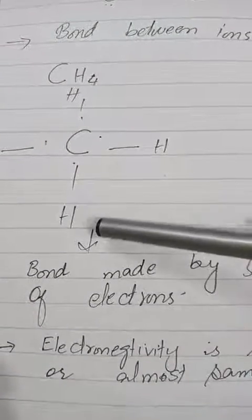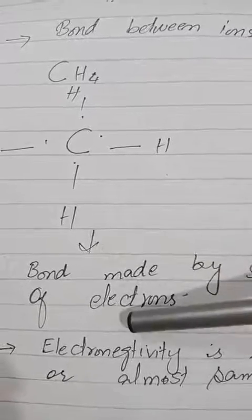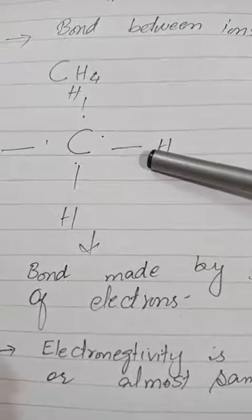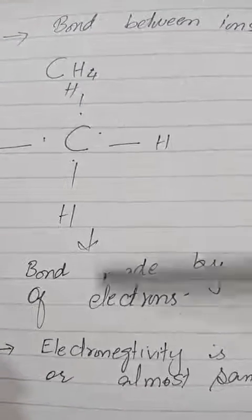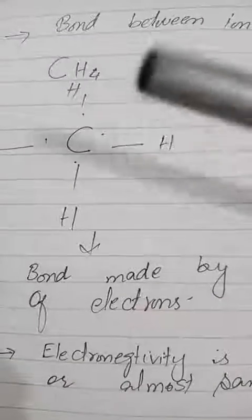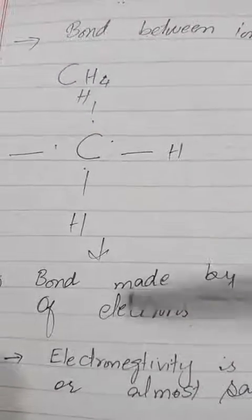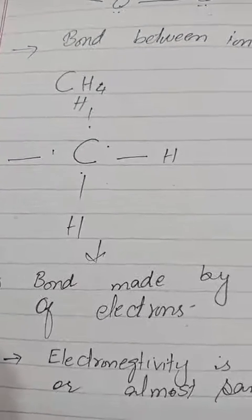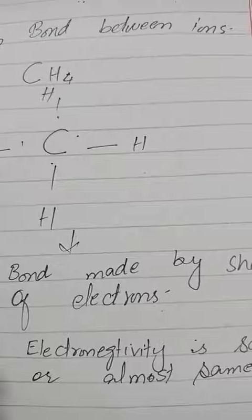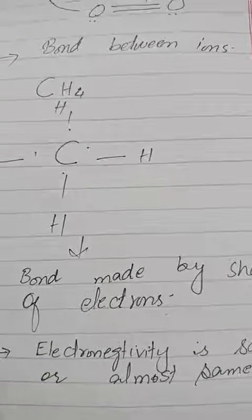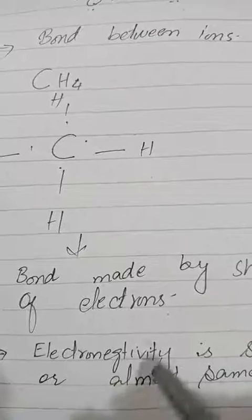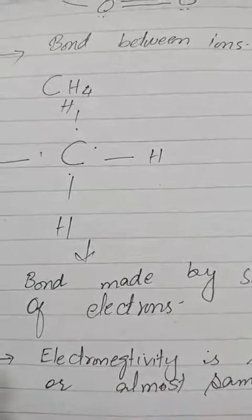Next, we will discuss the types of chemical bonds — different types of forces between atoms, between groups of atoms, and between ions. We will discuss this next time. Thank you.